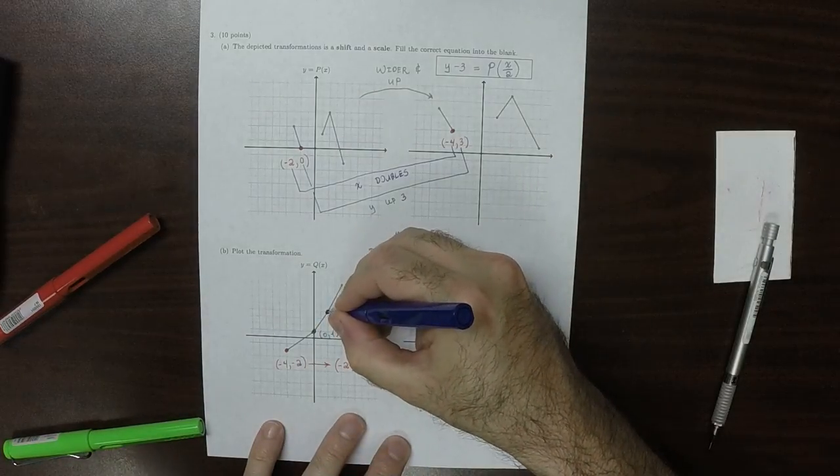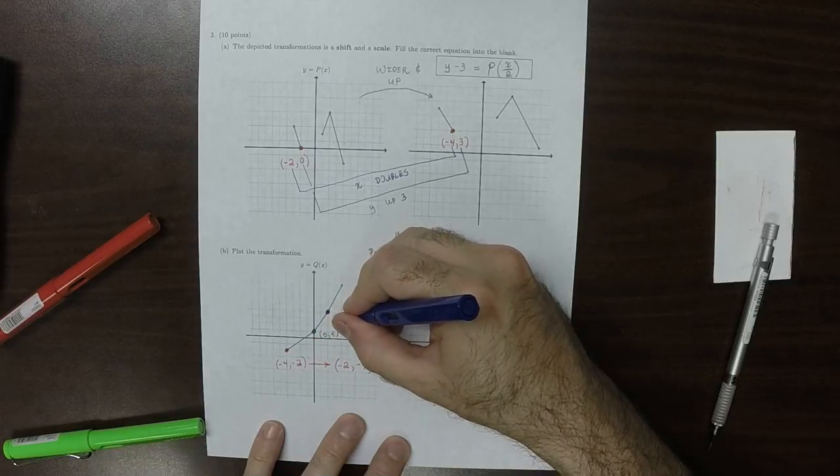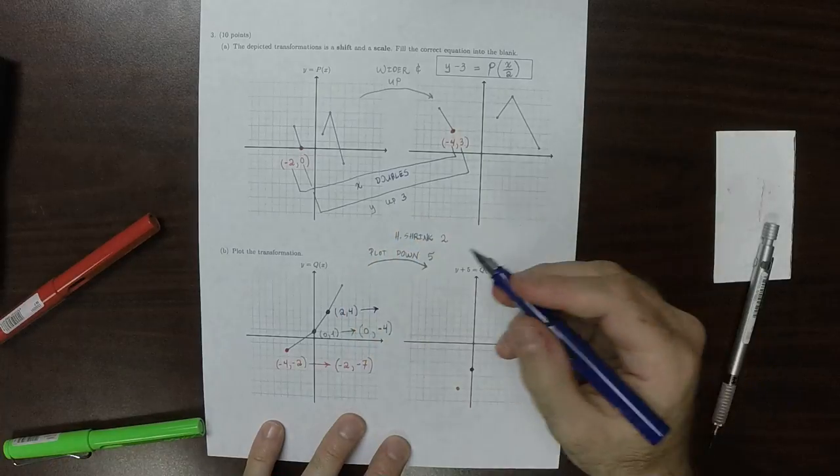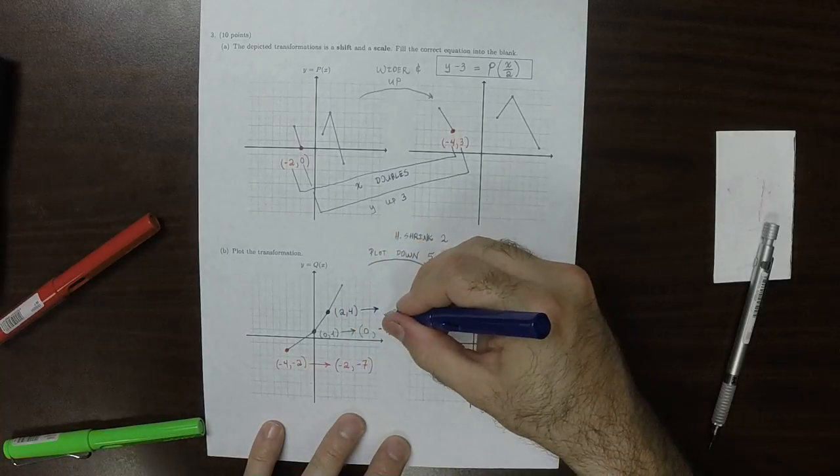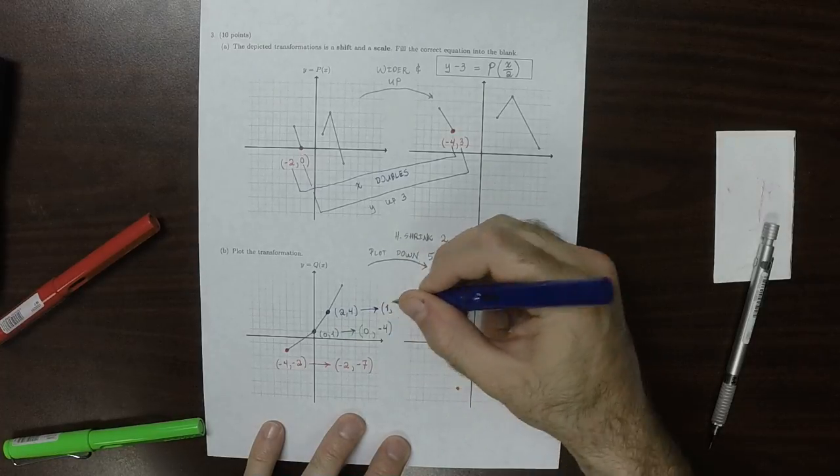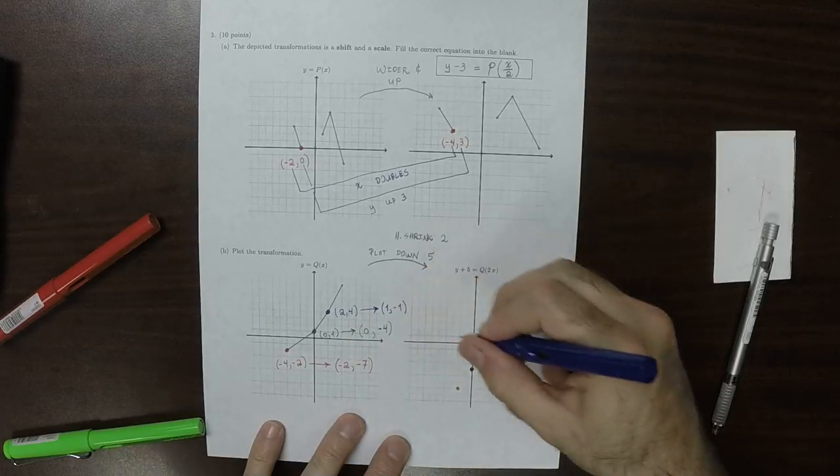So here's another point. This is the point (2, 4). So horizontal shrink, so that means that 2 is going to be divided by 2, so 1. And then down 5, so 4 minus 5 is (-1). So (1, -1).